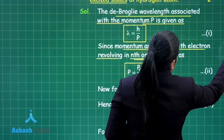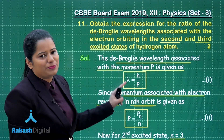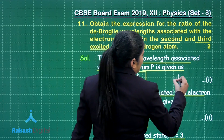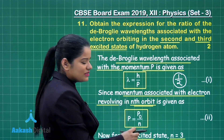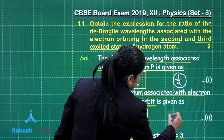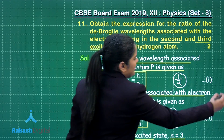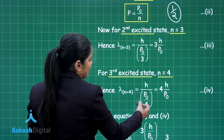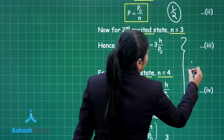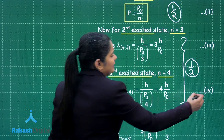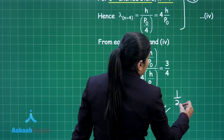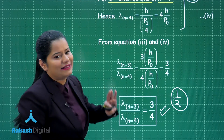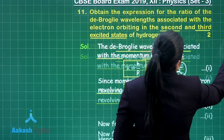Let us see how marks are awarded for each step. For writing the expression relating de Broglie wavelength to linear momentum, you score half a mark. For writing how p is related to the orbit, you get another half mark. For calculating the wavelength for both the second and third excited states combined, you score half a mark. Finally, for calculating the ratio, you get the last half mark — scoring two out of two for this question.